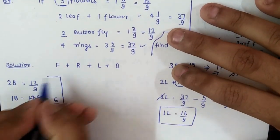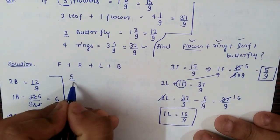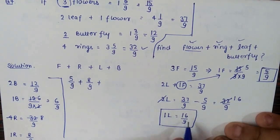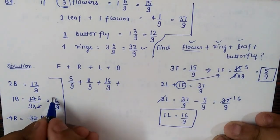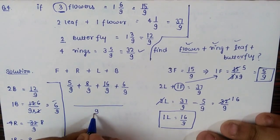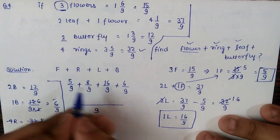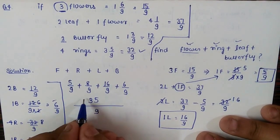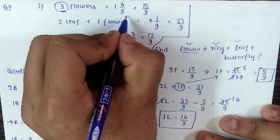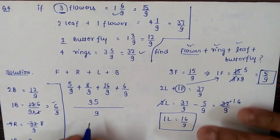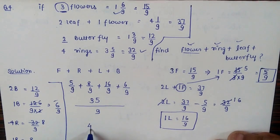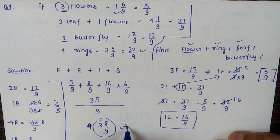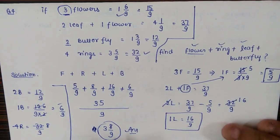Now we add all values: one flower (5/9) plus one ring (8/9) plus one leaf (16/9) plus one butterfly (6/9). With 9 as the common denominator, the sum is 35/9. Converting back to mixed fraction form, the answer is 3 and 8/9.